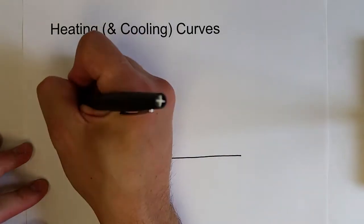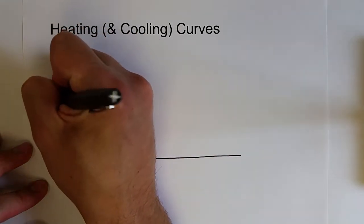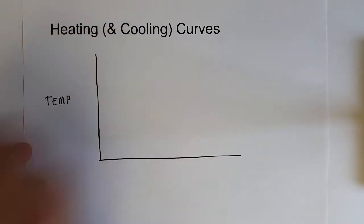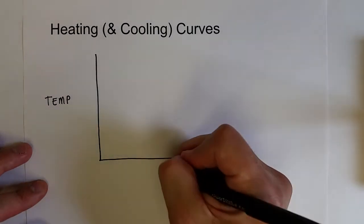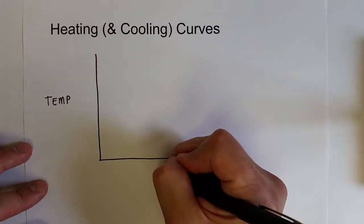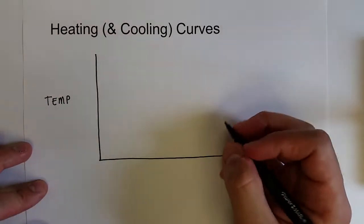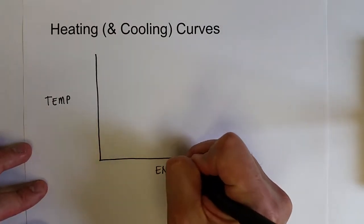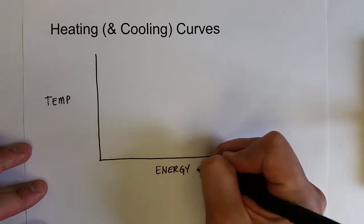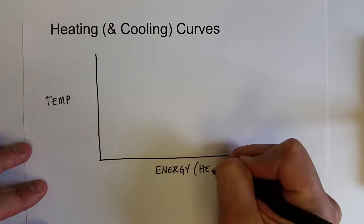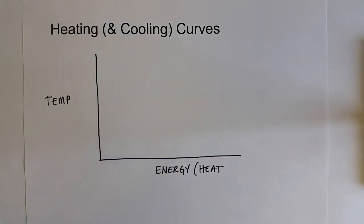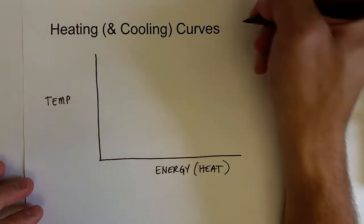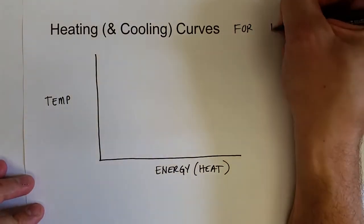On the y-axis we plot temperature of a substance, and on the x-axis we plot energy or heat added to a substance. Let's talk about water in this case, so this would be the heating or cooling curve for water.